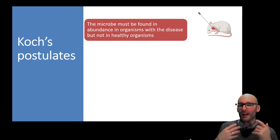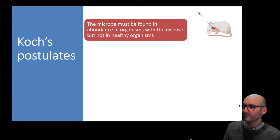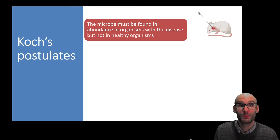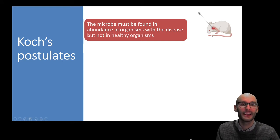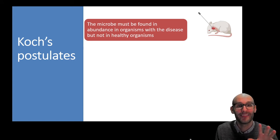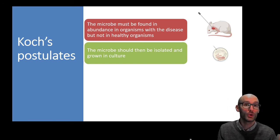First, you must isolate a bacterial culture from a diseased organism. The microbe you propose causes the disease must be present in high abundance in that organism. For example, with a mouse with an infected ear, you must be able to take that infected ear and show there is a lot of a certain kind of bacteria in it.